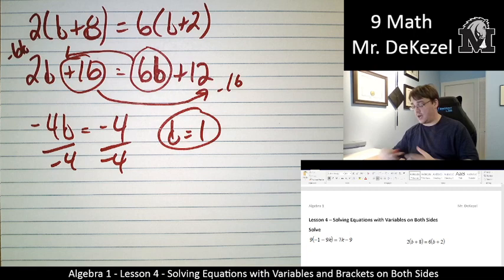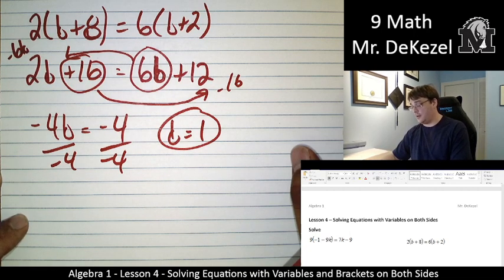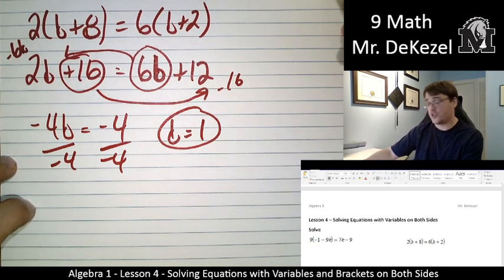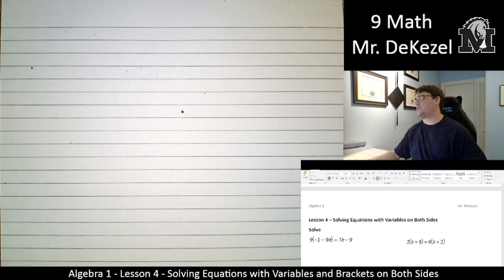So we are isolating the variable, getting it all by itself, and then we know what our answer will be. It should work out to a whole number or 0 in most of these problems. Let's go on to the next one.